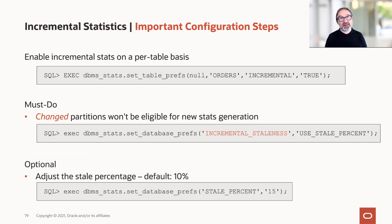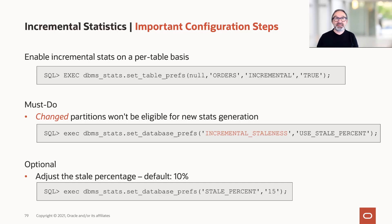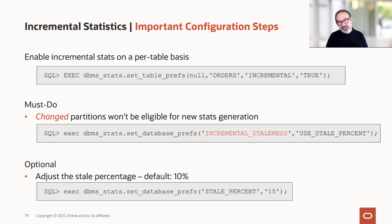A must-do is also enabling the incremental staleness. By default, if a change occurs in an existing partition — say an order from a week ago was modified — without incremental staleness, the statistics for that old partition become stale right away and need to be re-gathered. With incremental staleness, by default 10%, an existing partition can change by more than 10% with DML and still be considered okay. You can also tweak the stale percentage; in this example it's set to 15%. Be aware: incremental staleness is not on by default and must be explicitly enabled.